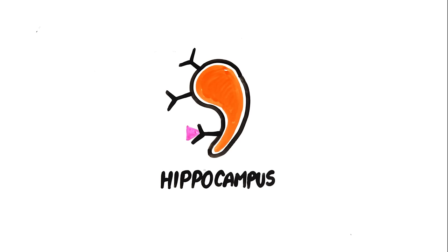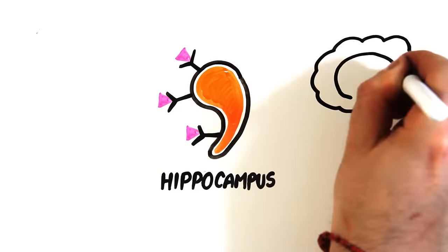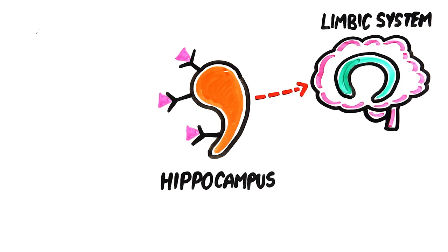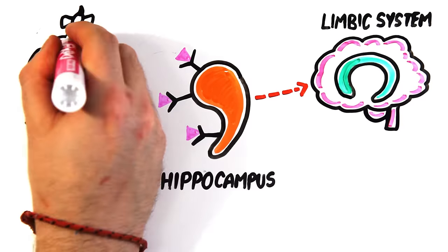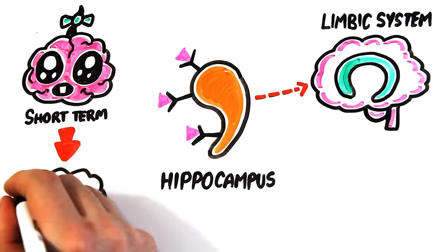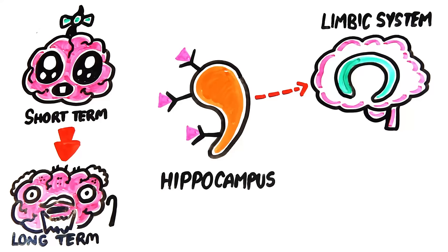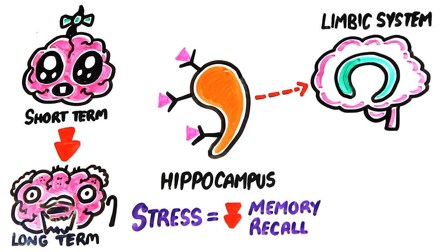Cortisol attaches to receptors on the hippocampus, which is a seahorse-shaped region of your brain that's part of the limbic system. And it's the hippocampus that's responsible for turning short-term memories into long-term memories. But when cortisol binds to the hippocampus, it impairs retrieval of memory. Therefore, if you're stressed, you'll have a more difficult time recalling information during an exam.